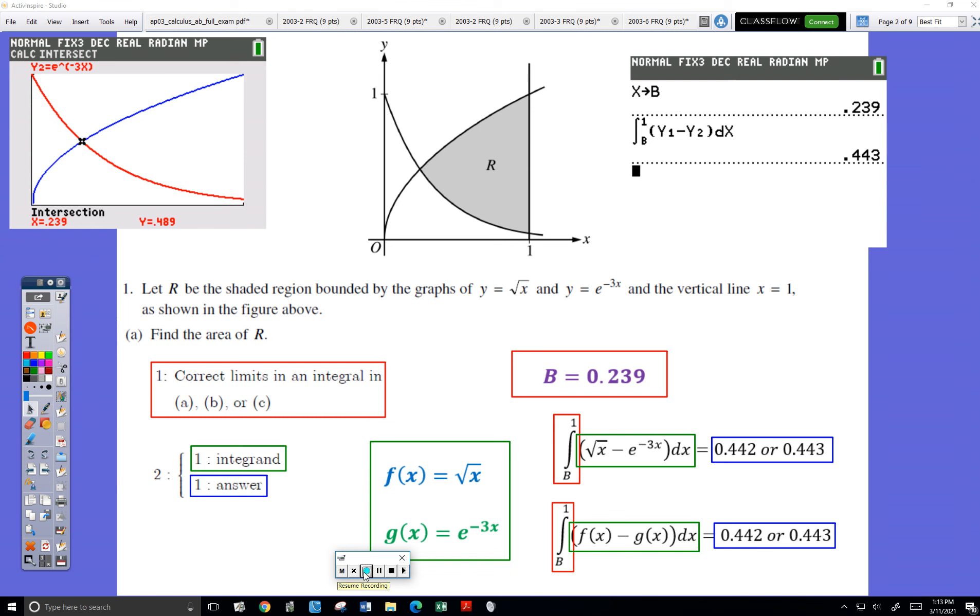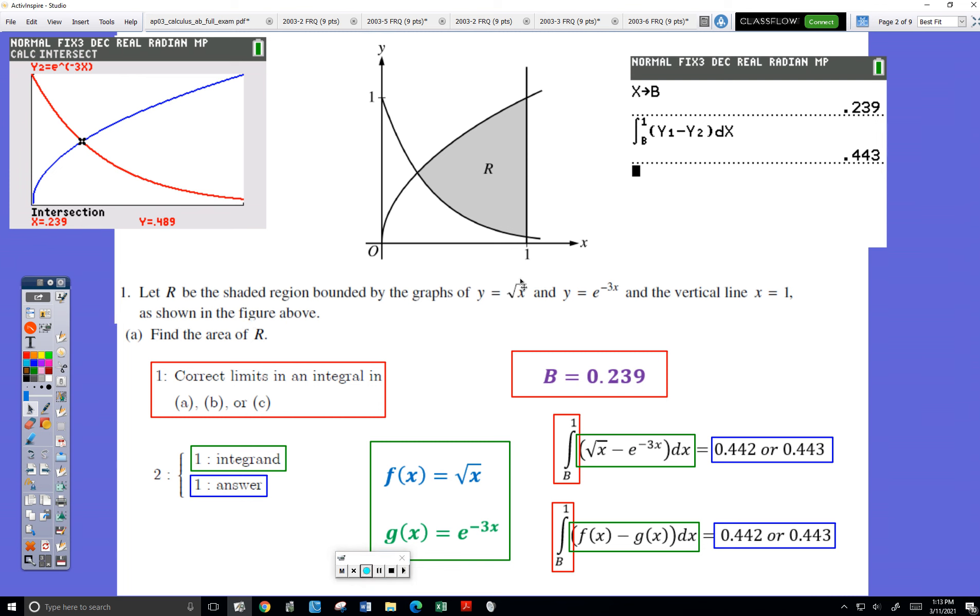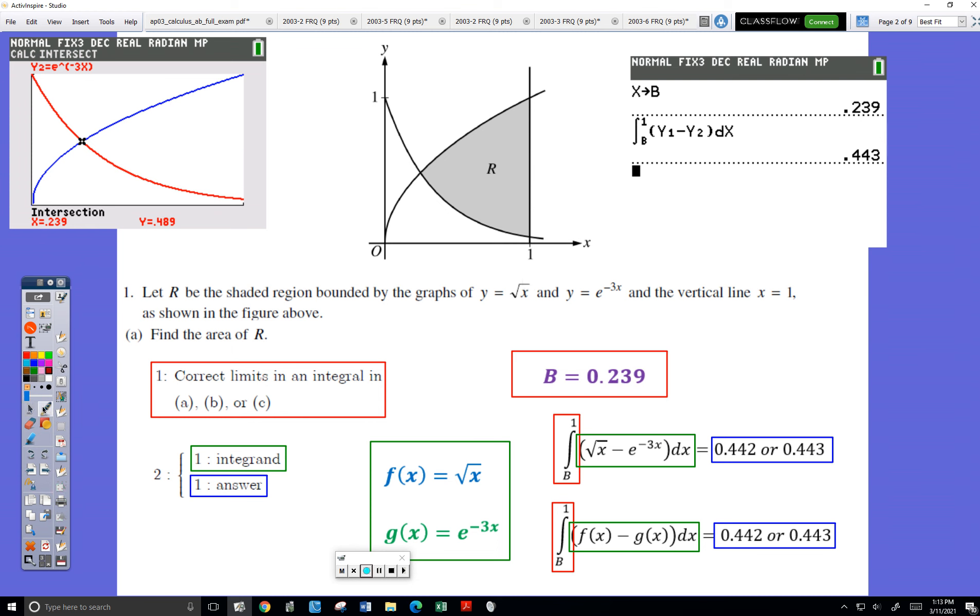Okay, so they give us a shaded region bounded by this graph and this graph.